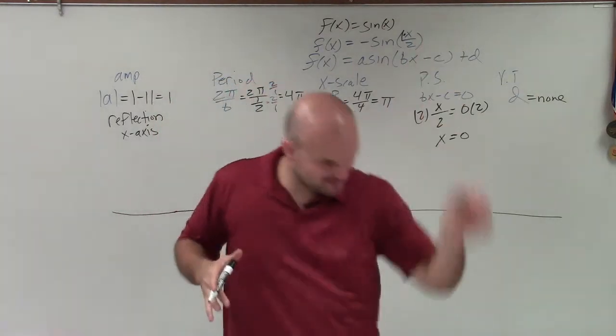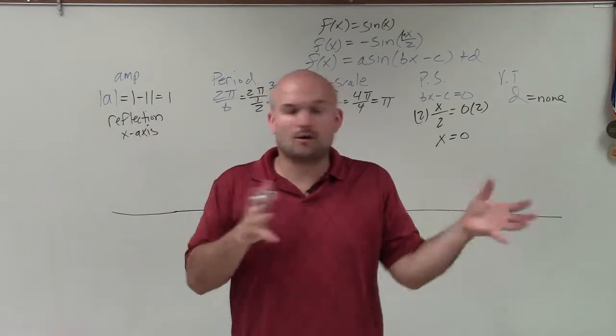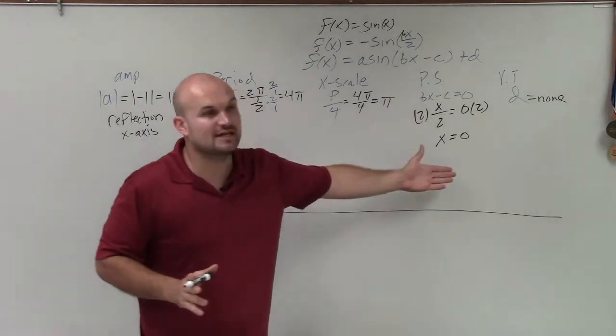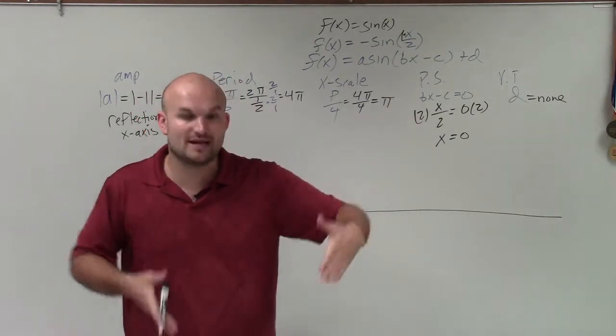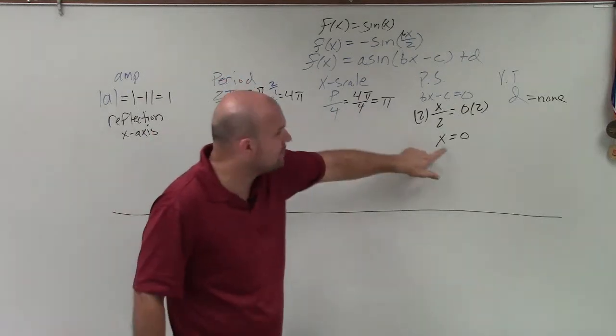Starts at 0, goes up to the maximum, looks like that. That's your parent graph, right? We're now applying all these transformations. And the first thing we're looking at is the phase shift. If that shifts left to right, you literally just take that graph and shift it left to right. But since I don't have a phase shift, my graph is going to kind of look like that.